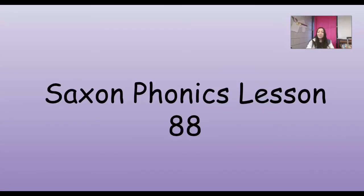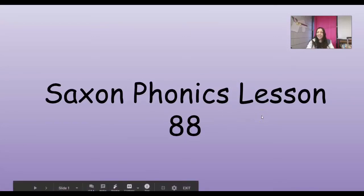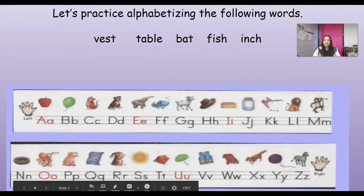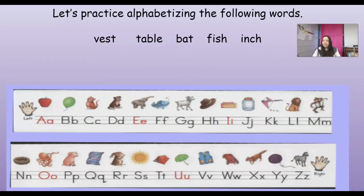Good morning, guys. We're ready for Saxon Phonics Lesson 88. The first thing we're going to do is try alphabetizing the following words. Remember, when we put things in ABC order or alphabetize them, we look at what we call our guide letter, which is that first letter first.